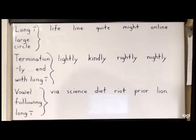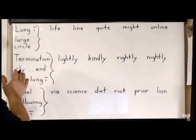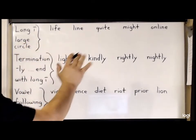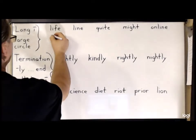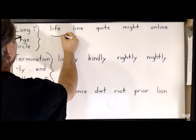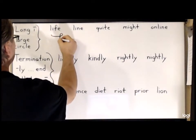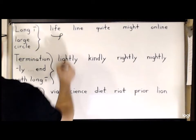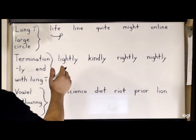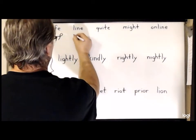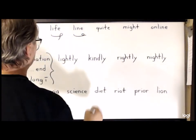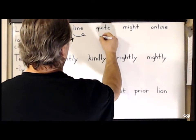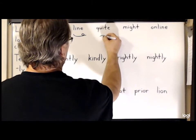There are certain words for which we will use the large circle for the long I sound. Like the word 'life', for instance, we'll use L, the large circle, and the F. For 'line', we'll use L and the large circle. And for 'quite', the K, the large circle, T.